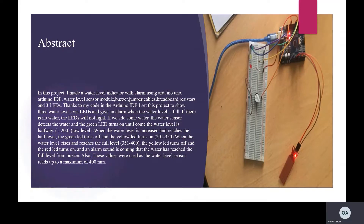Let's go on to the project now. I will summarize my project. In this project, I made a water level indicator with alarm using Arduino Uno, Arduino IDE, water level sensor module, buzzer, jumper cables, breadboard, resistors, and three LEDs. Thanks to my code in the Arduino IDE, I set this project to show three water levels via LEDs and sound an alarm when the water level is full.